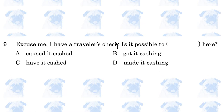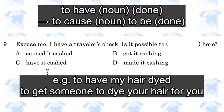Excuse me, I have a traveller's check. Is it possible to blank here? The answer is C, have it cashed. This grammar is a blend of causative and passive. 'Have' plus a noun plus a past participle means the action denoted by the past participle is done to the noun. This is partly causative because the causative verb 'have' implies someone else is going to cash the check for you, so you are not the one cashing it.